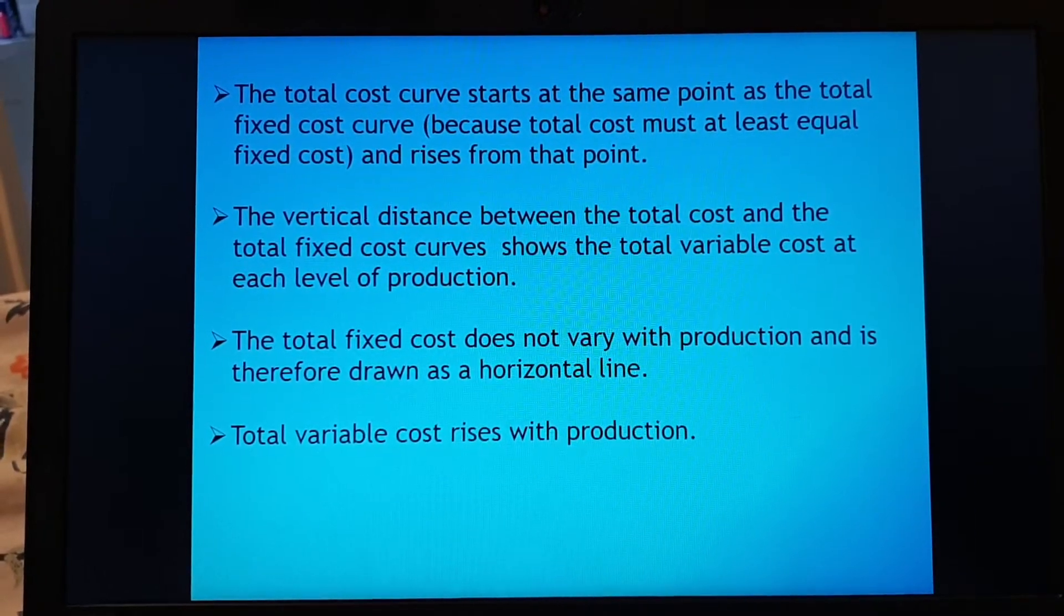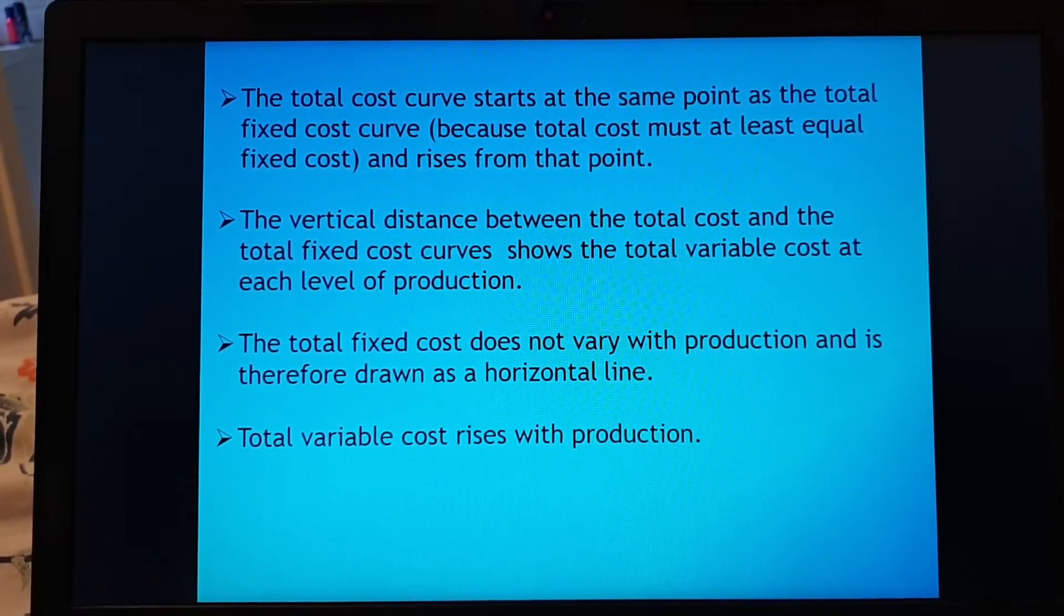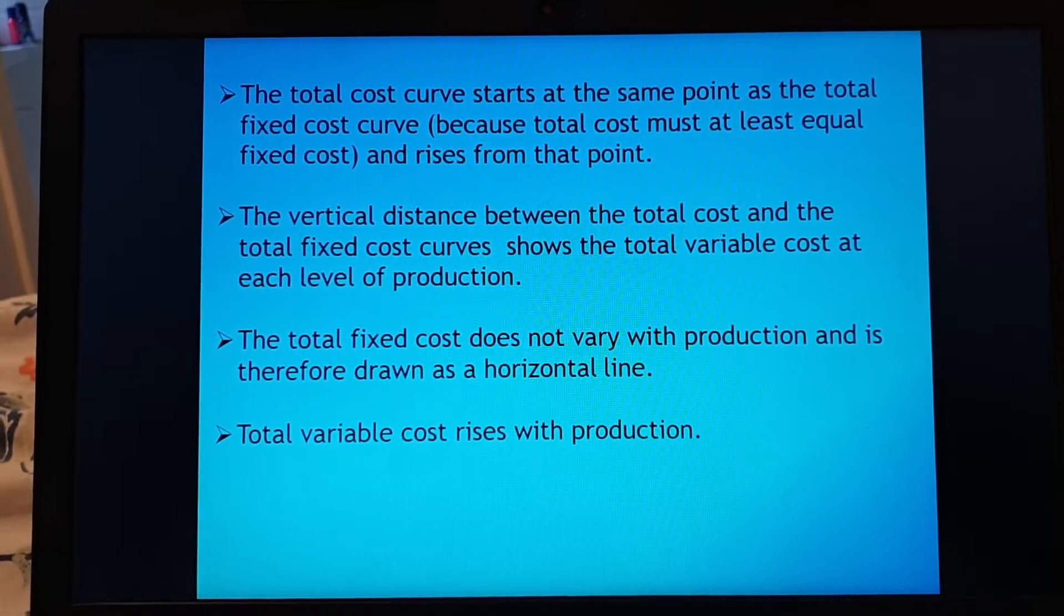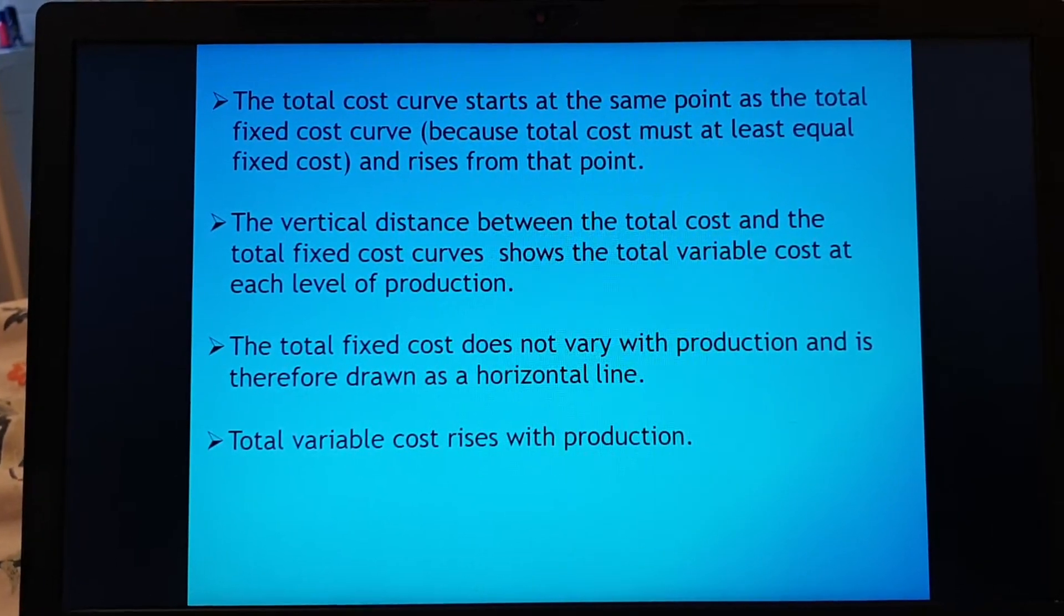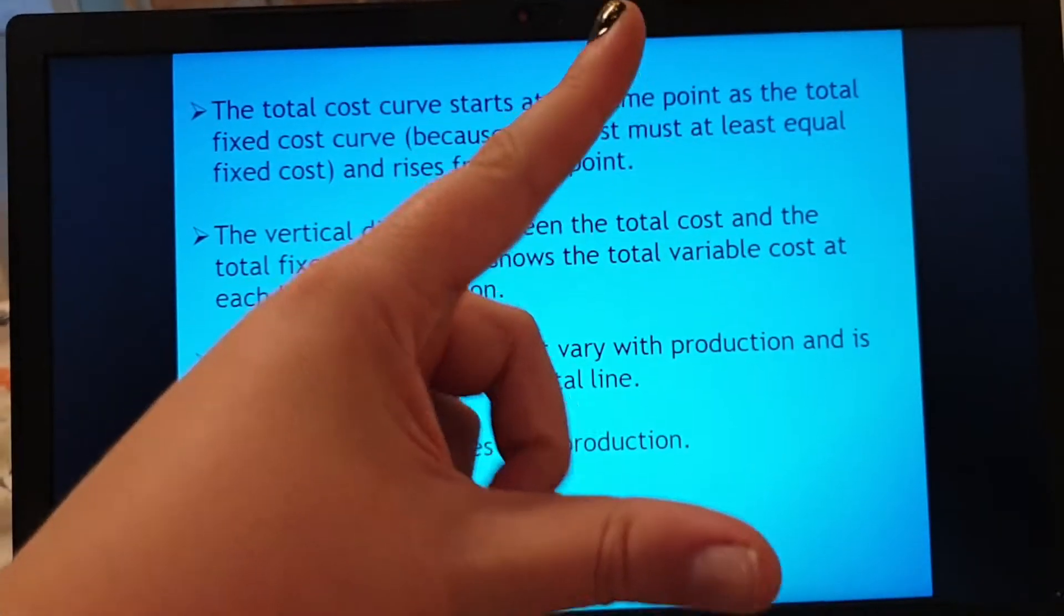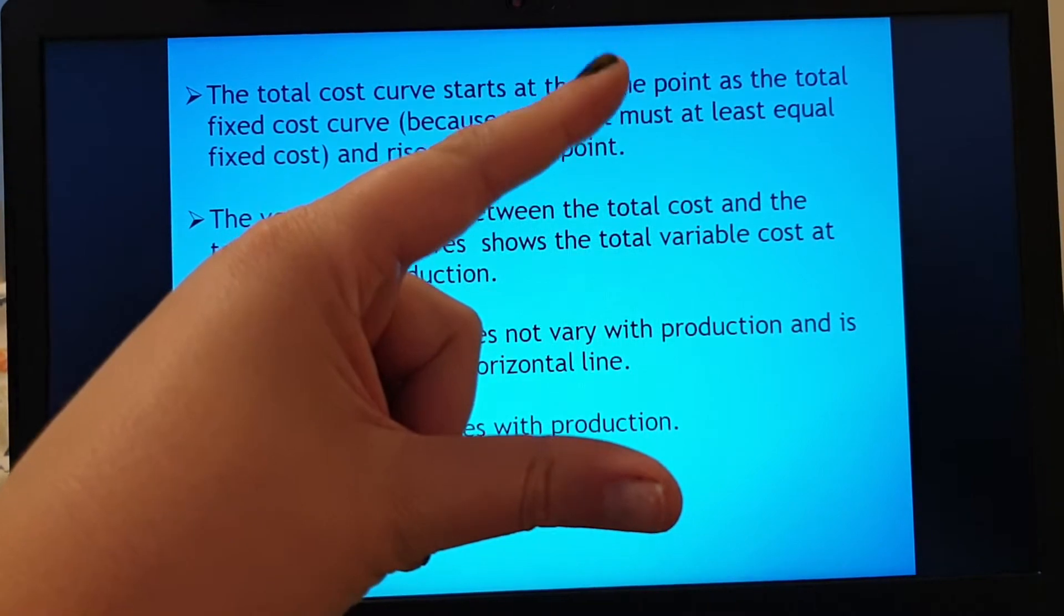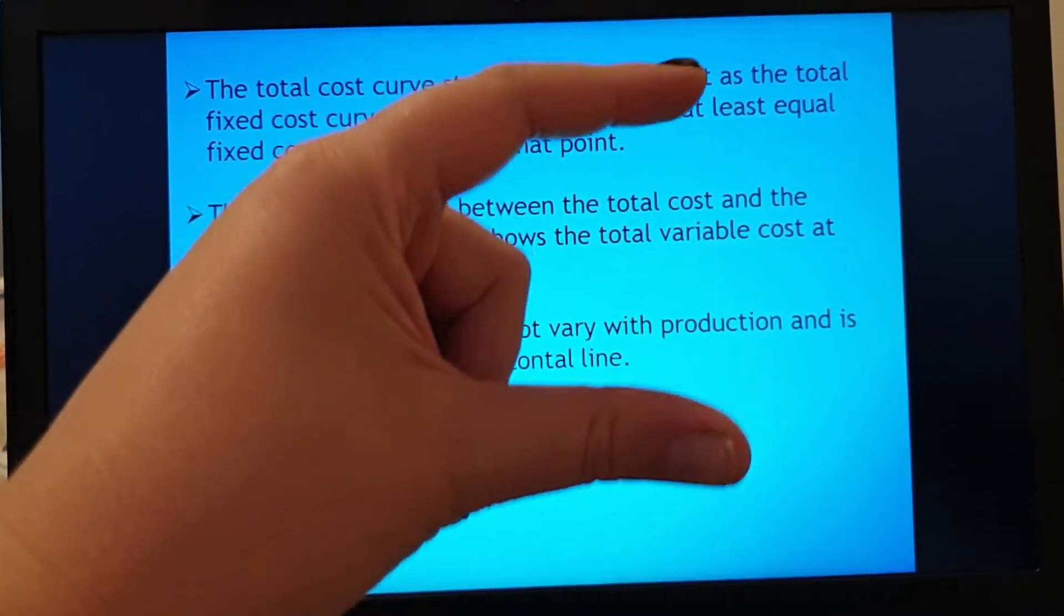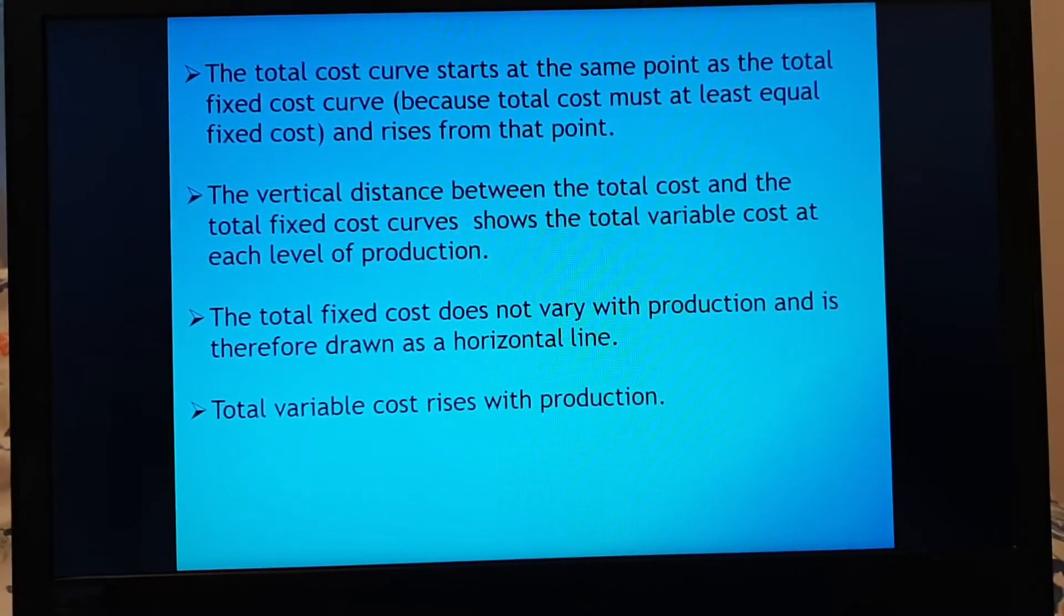The vertical distance between the total cost and the total fixed cost curve shows the total variable cost at each level of production. So remember if you looked at the curve it was like this and I told you the area in between my fixed cost and then my total cost is known as my variable cost.